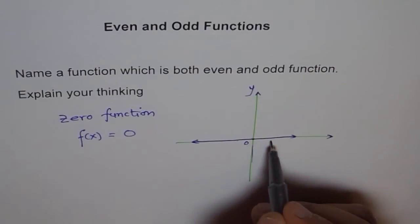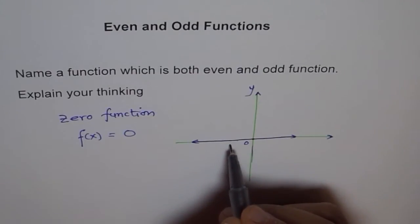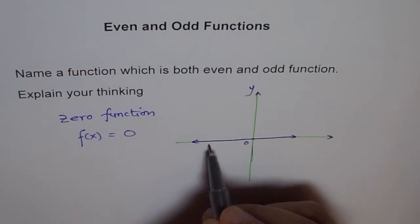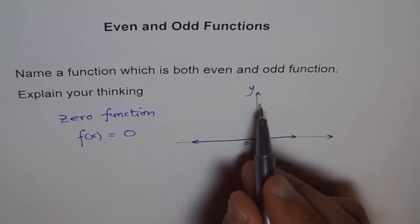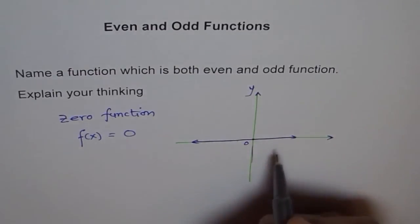If there is minus 10 here, if there is plus 10 here, there is minus 10 here. If there is minus 20 here, there is plus 20 there. So, it's odd. It's even because it can be reflected on y-axis.